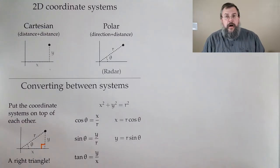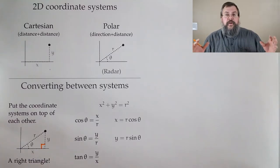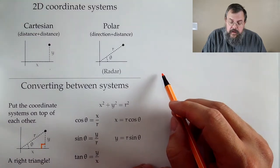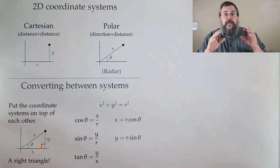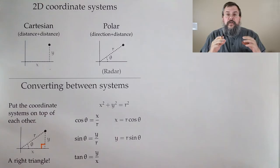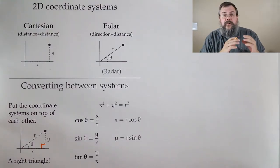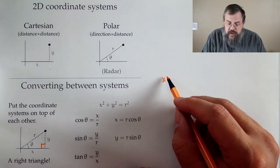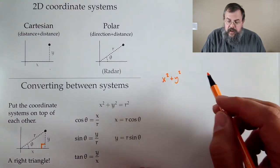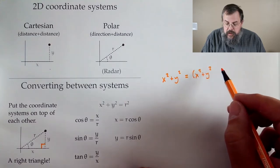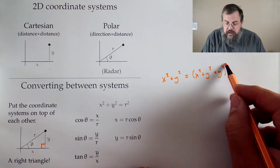One thing we haven't addressed is why we'd want to do this. It comes down to a simple observation: some things are easier to describe in other coordinate systems. There are certain curves where it's easier to figure out what's happening in one coordinate system versus another. For example, suppose I write down: I'm interested in all points where x squared plus y squared equals the quantity (x squared plus y squared plus y) all squared.